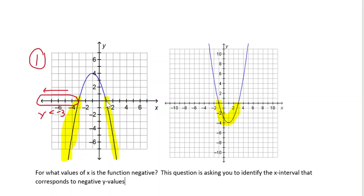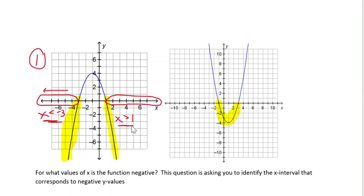And then also, when you get over to this x-intercept of positive 1, after positive 1, everything in that table of values — every x value — is going to be associated with a y value that's negative. So all x values greater than 1. We're describing which x values have negative y values that correspond to them.